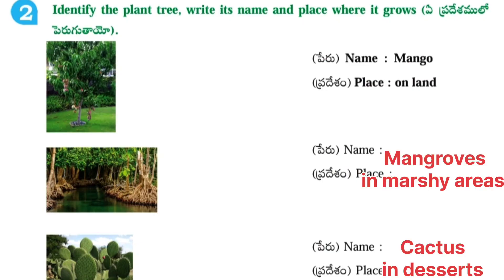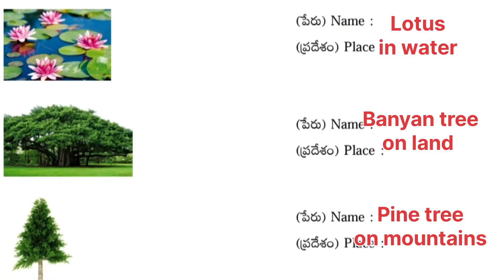Next one, identify the plant or tree, write its name and the place where it grows. First picture: Mango — it grows on land. Second picture: Mangroves — it grows in marshy or swampy areas. Third picture: Cactus — it grows in deserts. Next one: Lotus — it grows in water.